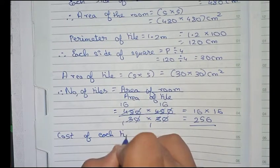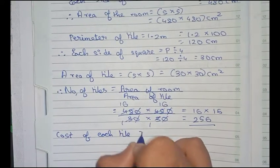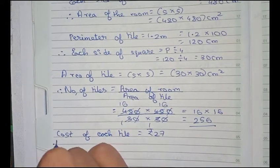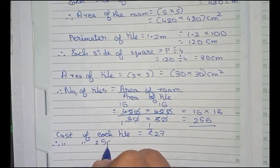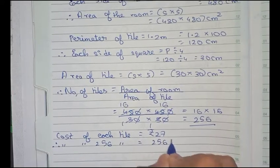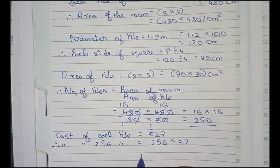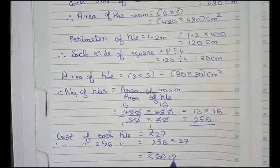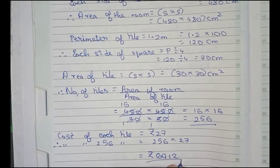Cost of each tile is rupees 27. Therefore, cost of 256 tiles equals 256 into 27, which equals rupees 6912. This is the final answer.